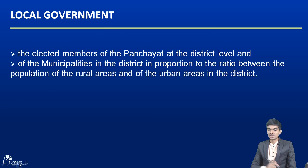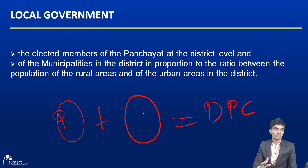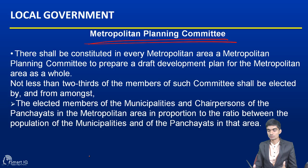In the same way, there is also a Metropolitan Planning Committee. In the case of a metropolitan area, the panchayats and municipalities come together to the Metropolitan Committee, take decisions, and make the draft plan. Here also, four-fifths of the members will be elected members, and the number of representations will be based on proportional representation - meaning as per the population, people are represented in the committee.